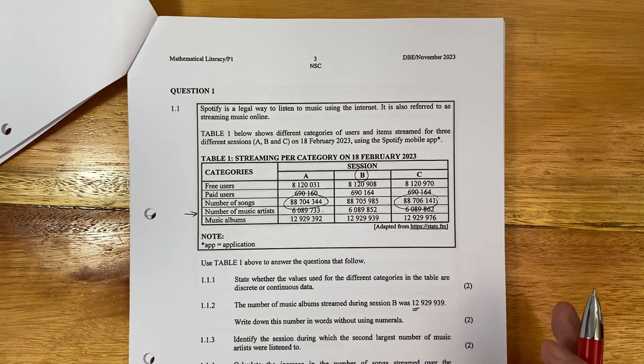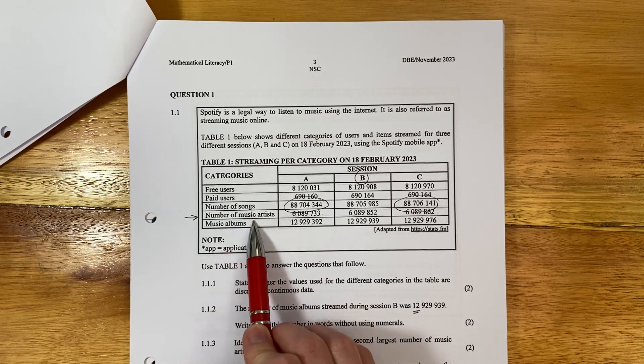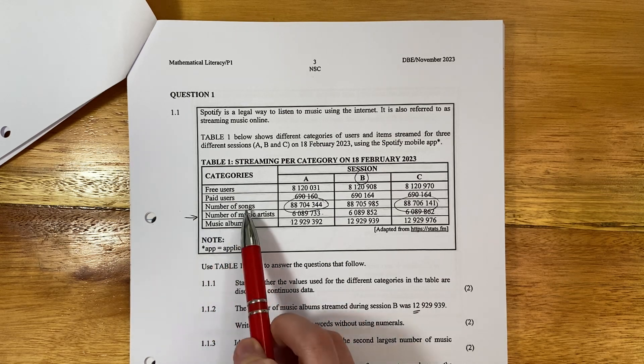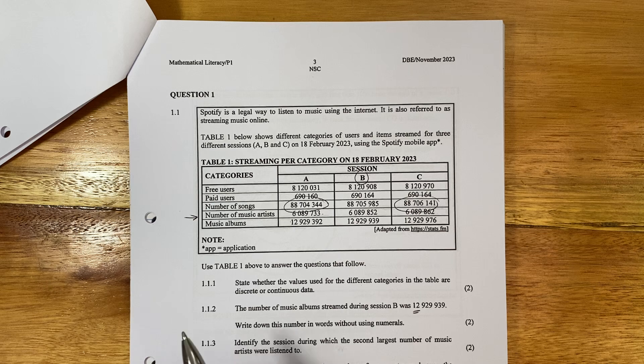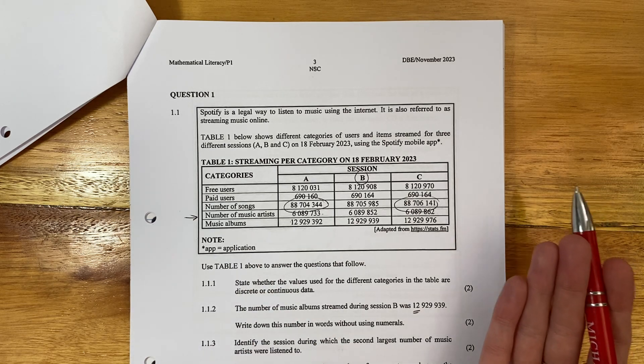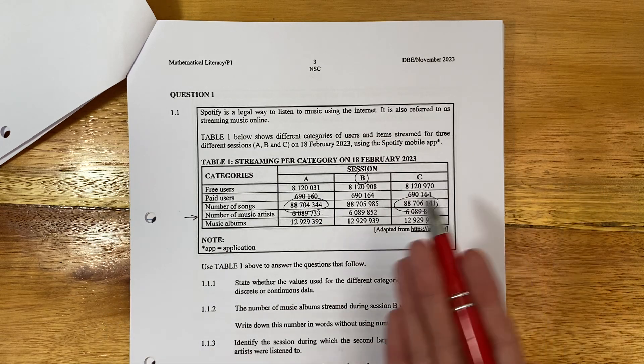So here, let's look at this table. It has users, it has songs and it has artists and albums. You can't have half a user. You can't have half a song. You can't have half a music artist or half an album. It either is an album or an artist or a user or it's not. So in this case, it is discrete. So let's go and write this out.